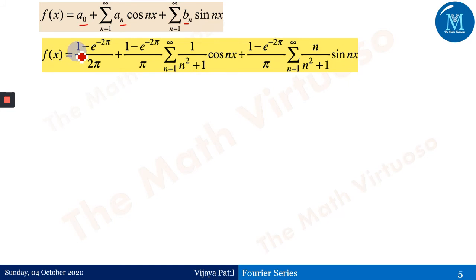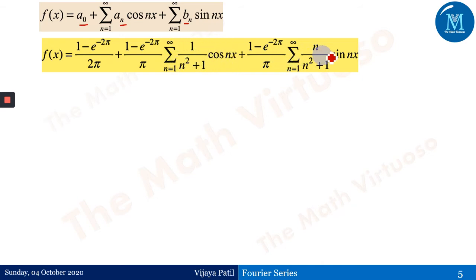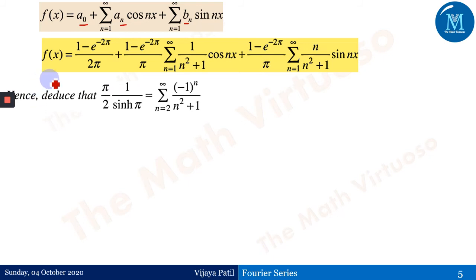Putting a₀, aₙ, and bₙ into the Fourier series gives: f(x) = (1 − e^(−2π))/(2π) + (1 − e^(−2π))/π · [Σ cos(nx)/(n²+1) + Σ n·sin(nx)/(n²+1)]. Note that (1 − e^(−2π)) is independent of n and is taken outside the summation, while 1/(n²+1) and n/(n²+1) remain inside since they depend on n.